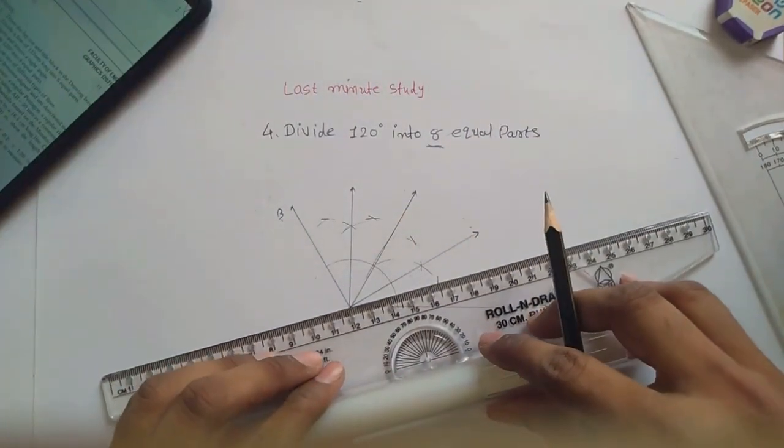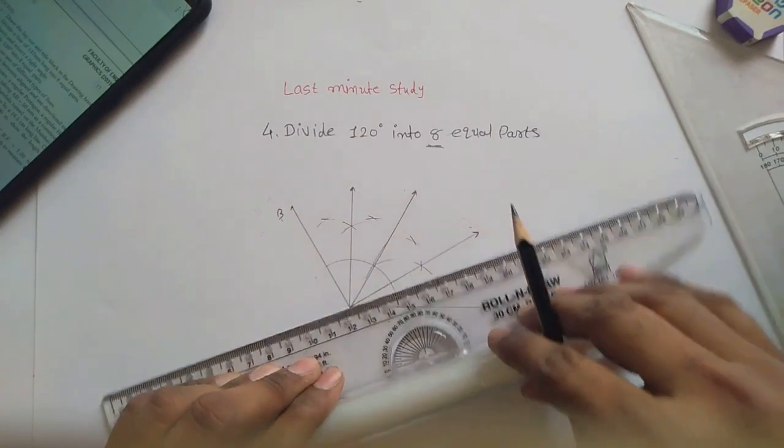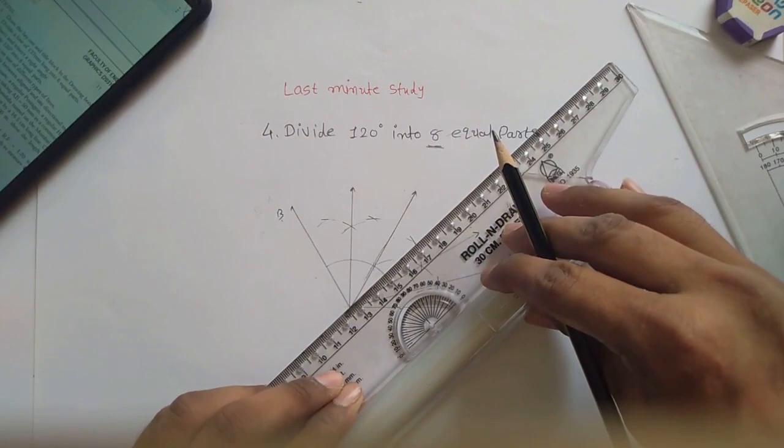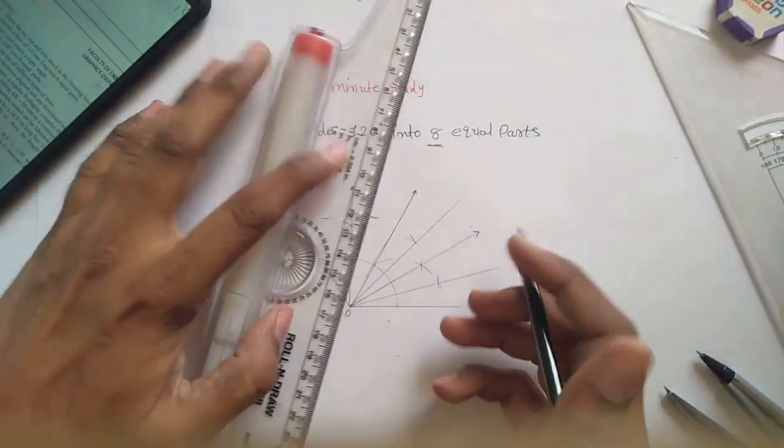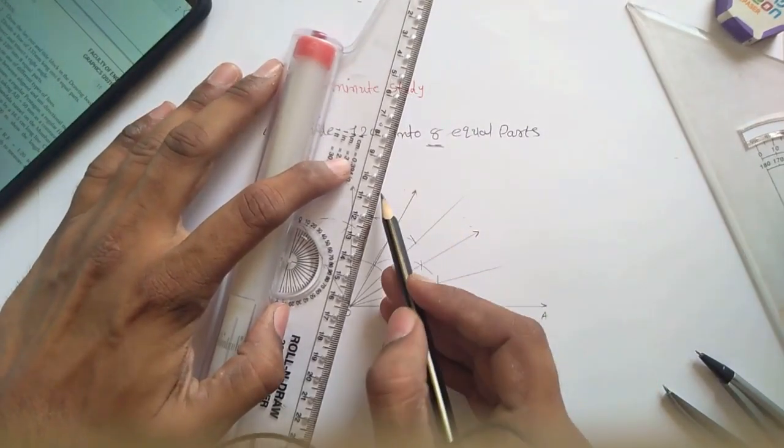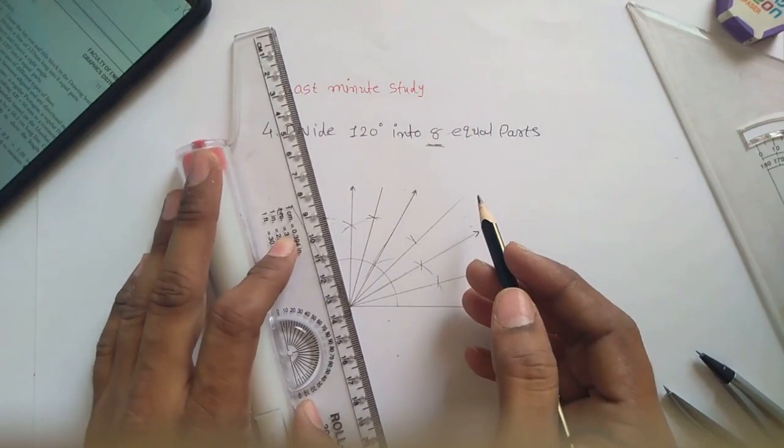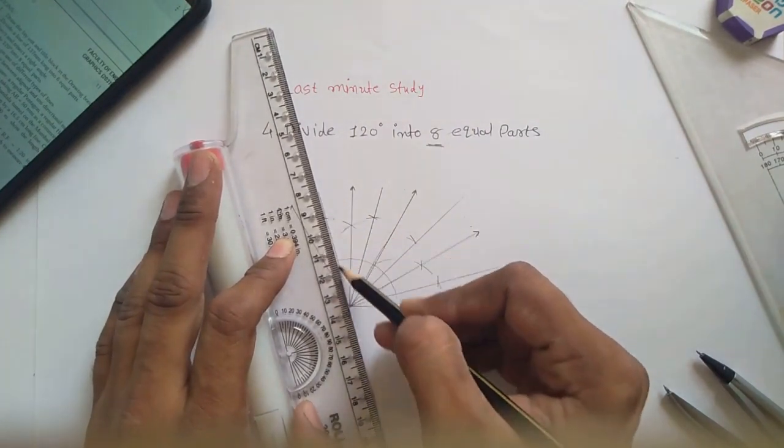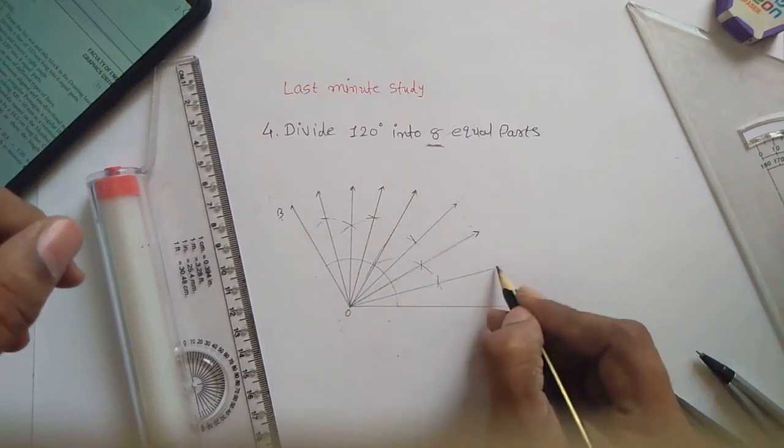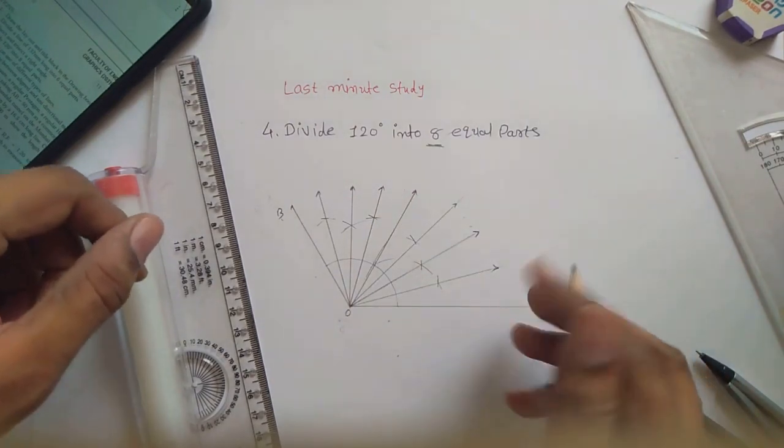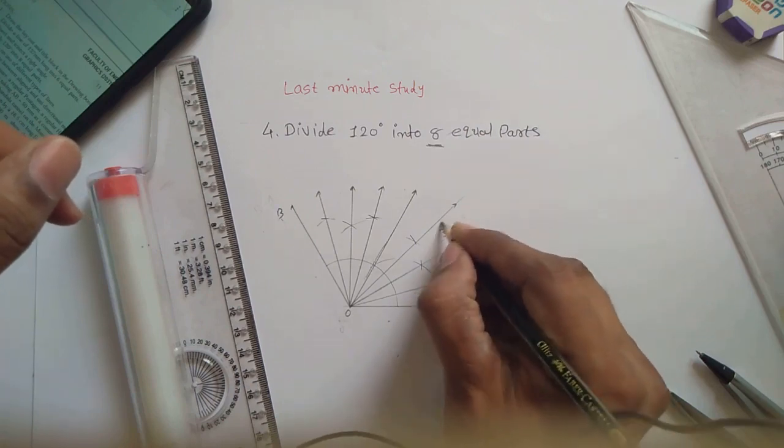Connect it with the intersecting point and connect it with the origin. Now you can see these are the first part, second part, third part, and fourth part.